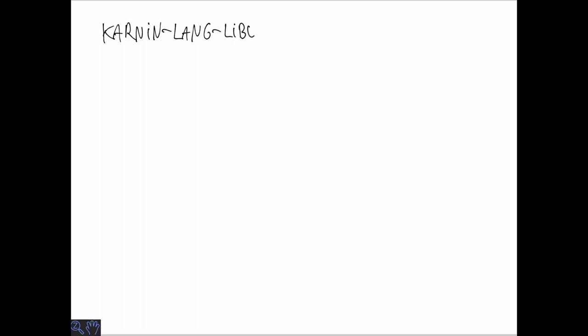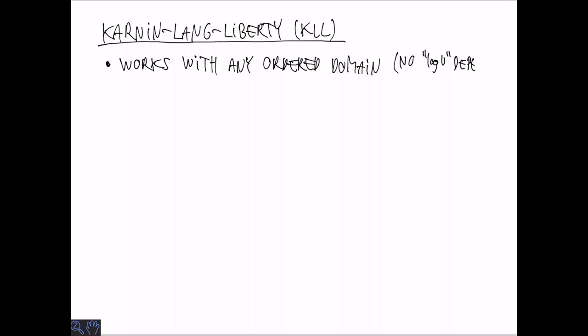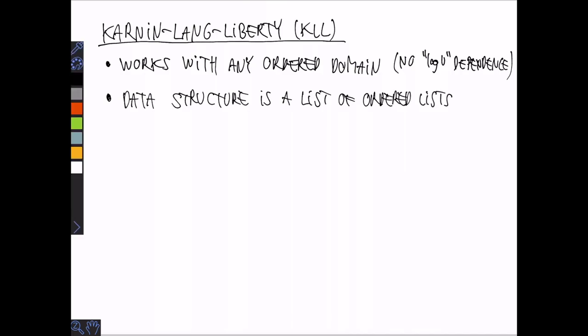Next, we are going to look at the so-called Karning-Lang-Liberty or KLL summary, which has become quite famous and widely used for summarizing ordered data. It works with any ordered domain, so it doesn't have to be integers in some range. And this also means that we are not going to get the dependence on the log of the range size as we saw before. The data structure is a sequence of lists, also called buffers, that are each stored in sorted order.